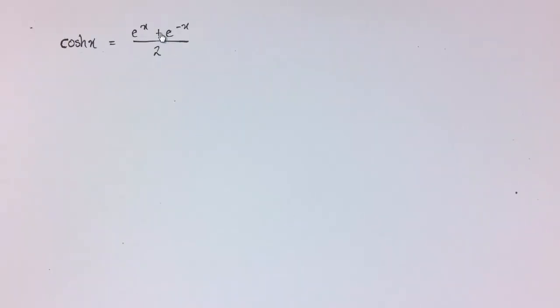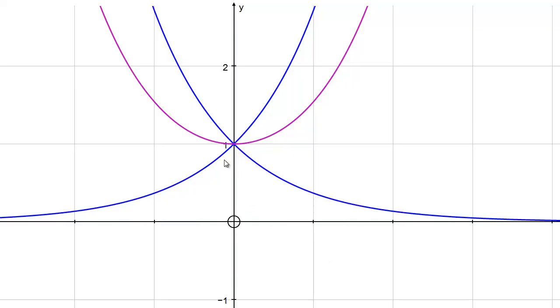So essentially what that means is take the average of e to the x and e to the minus x, add them together and divide by 2. The purple graph is the graph of cosh x, and you can see it lies halfway between e to the x and e to the minus x at any given point. Here at 1 where they intersect, it's 1 plus 1 divided by 2, which is 1. We can see it's an even function that has a line of symmetry in the y-axis.